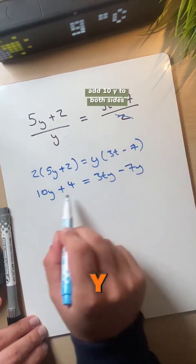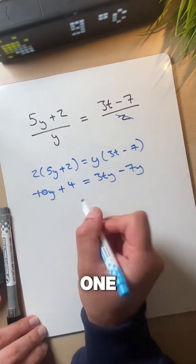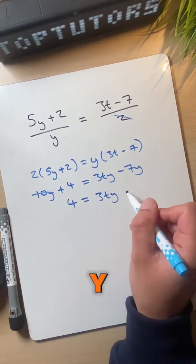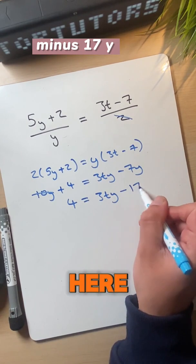Let's add 10y to both sides to get rid of this one. So that's 4 equals 3ty minus 10y, so that's minus 17y.